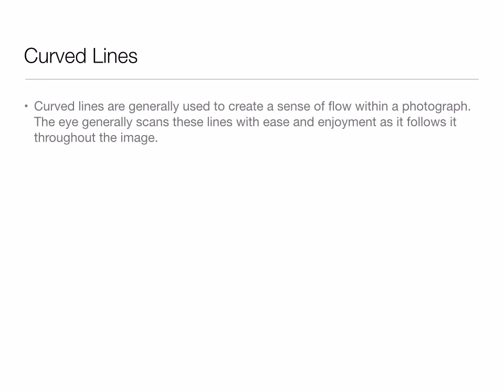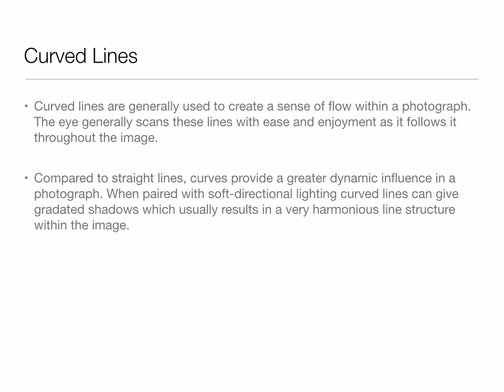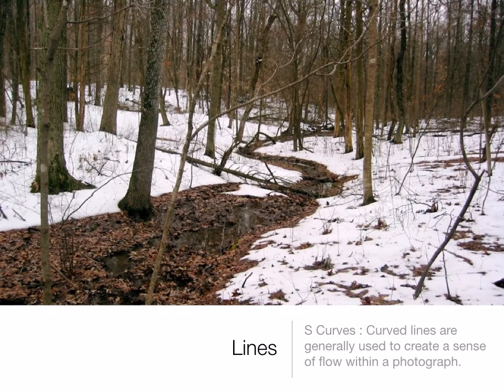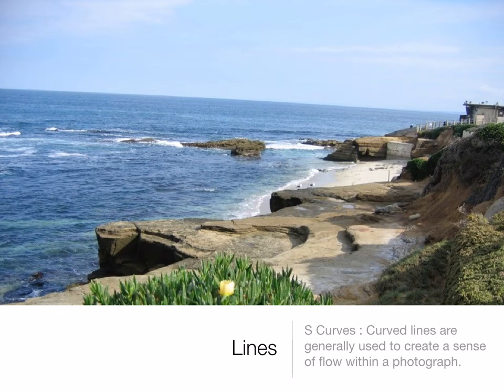Let's talk about curved lines in photography. Curved lines are often used to create a sense of flow within a photograph — the eye generally scans these lines with ease and enjoyment as it follows throughout the image. Compared to straight lines, curves provide a greater dynamic influence in a photograph. Notice how it flows through the back of the picture and vanishes — that's generally what happens with lines: you get vanishing points. Here we have curvy lines going down the beach, in the rocks, and also within the waves.